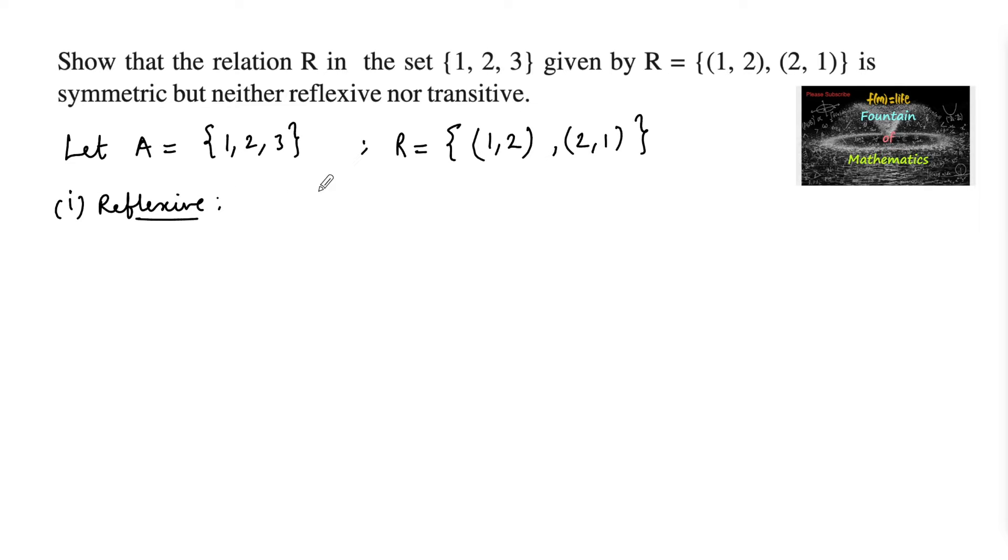The condition for reflexive is for every a belongs to the set A, (a,a) must belong to the relation R. But here, let us consider any one element, say 1 belongs to the set A, which implies (1,1) does not belong to the relation R. So we can conclude that the relation R is not reflexive.